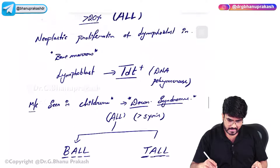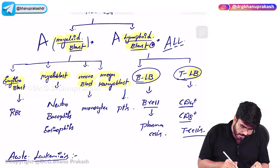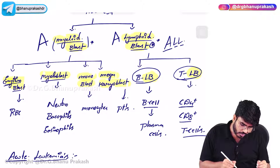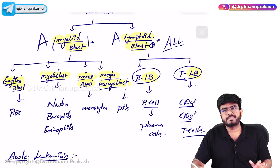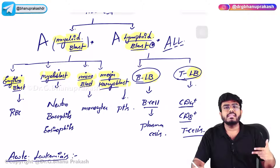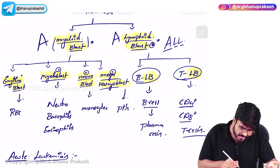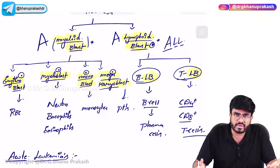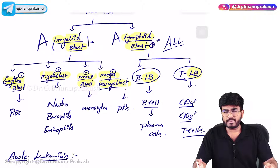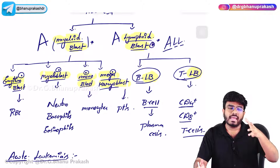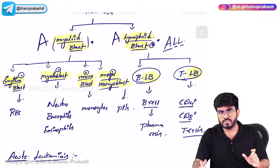Looking at the classification: the myeloid stem cell can form erythroblast, myeloblast, monoblast, or megakaryoblast - these are all immature cells. AML is further subclassified based on which type of immature cell is getting proliferated, and also based on the cytogenetic abnormality.